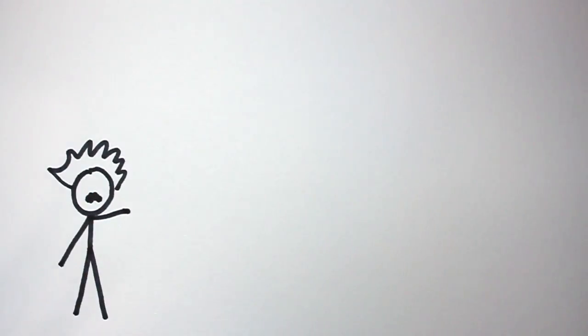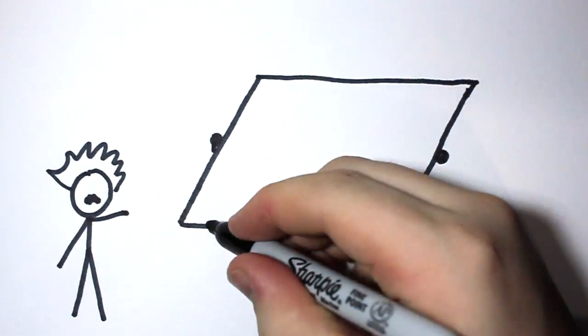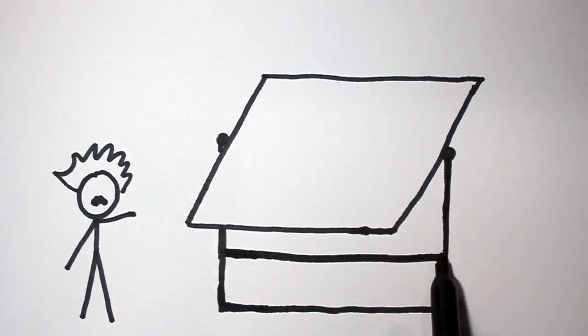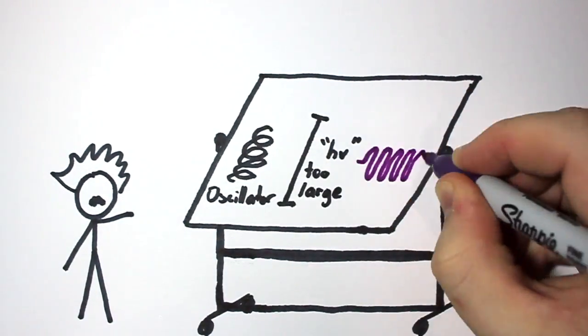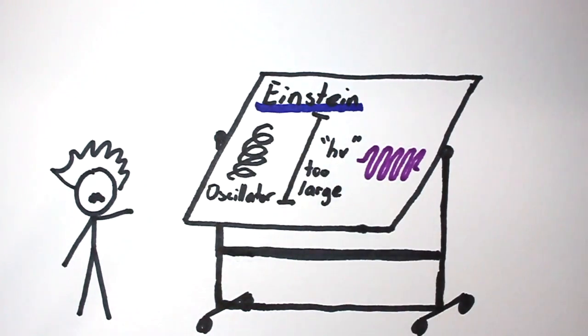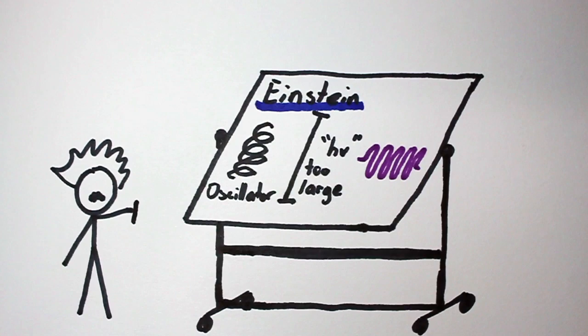It literally took an Einstein to further postulate that at high frequencies the minimum energy is so high that it would be very unlikely that the oscillators would ever move that fast, allowing for the drop in the graph at high frequencies.